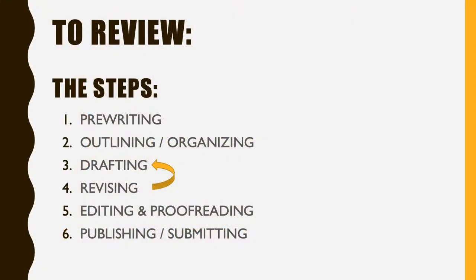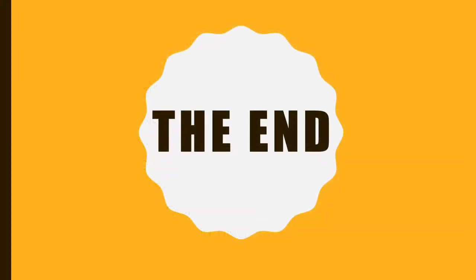To review, the writing process steps are: pre-writing, outlining and organizing, drafting and revising, editing and proofreading, and then publishing or submitting. That big recursive arrow is there between revising and drafting because those two really sort of exist on the same plane — they tend to go hand in hand. I hope this has been a helpful way to consider the writing process in terms of how to start, how to proceed through the steps of writing, and how to go back through and think about the way you approach revision and editing.